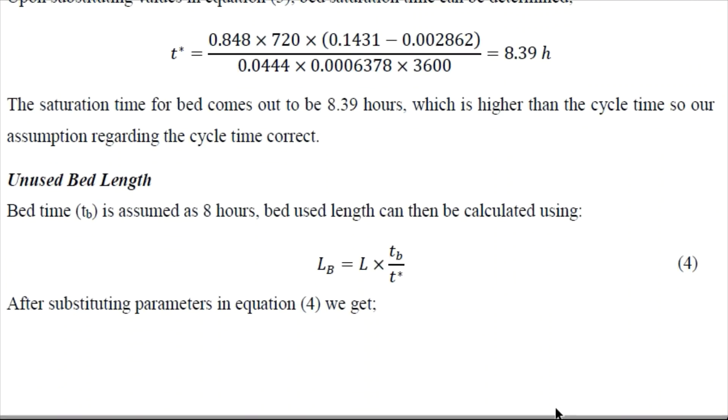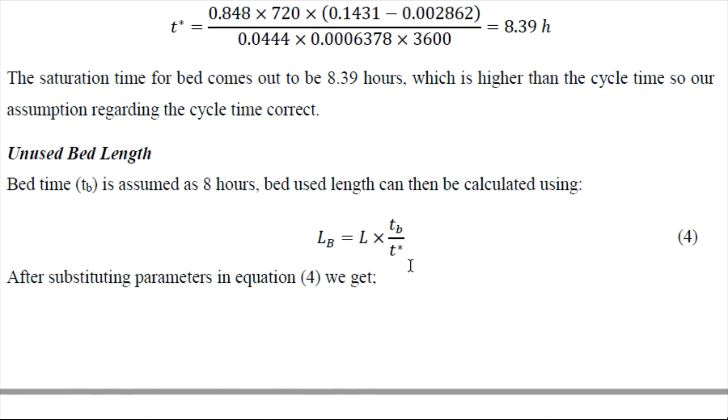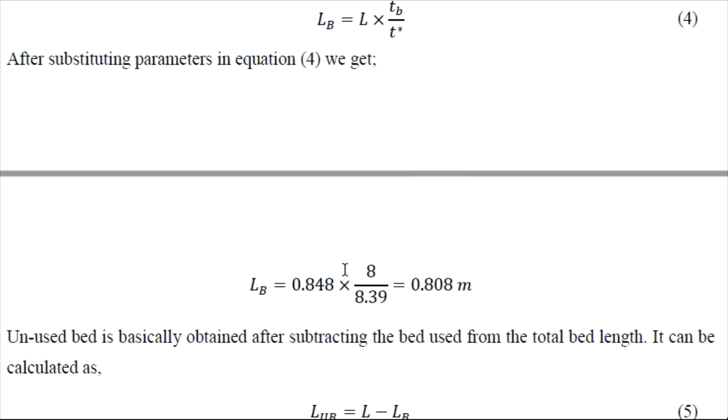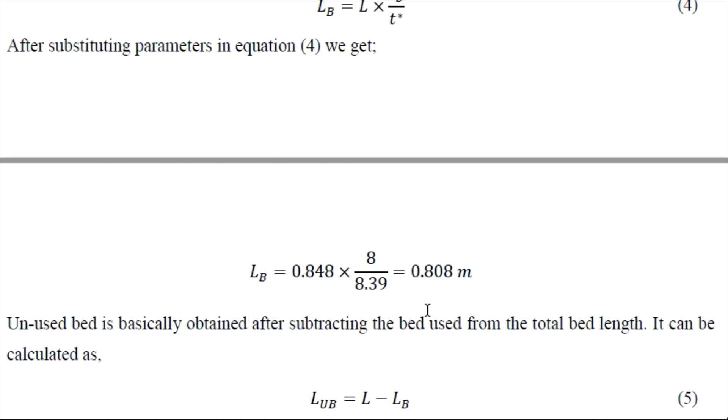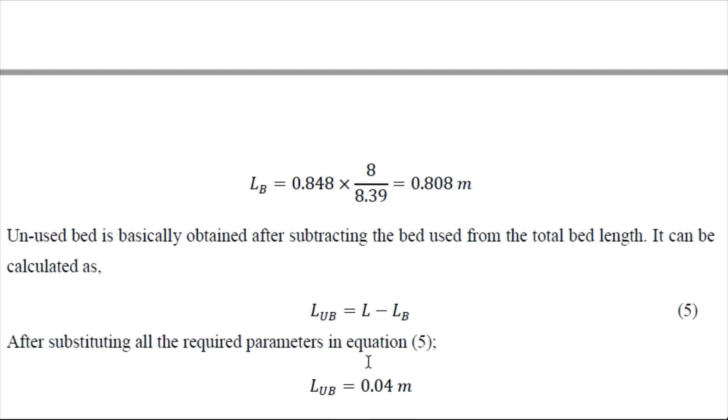Now we can find the unused bed length. That is LUB is equal to LB, that is total bed length, into TB, that is basically cycle time, over T_sat, that is time required for complete saturation. So length of bed used comes out to be 0.808 and then it can be subtracted from the total length to calculate the unsaturated bed length at the end of saturation.